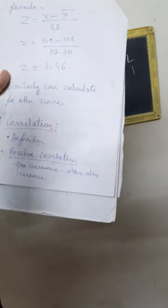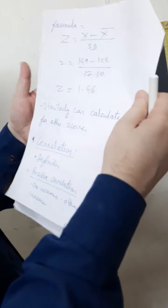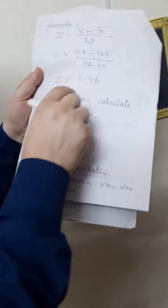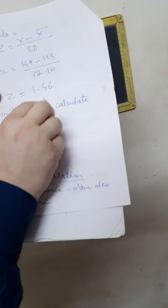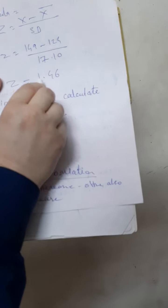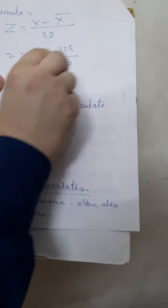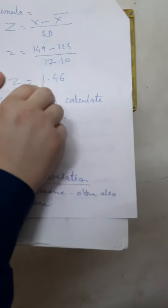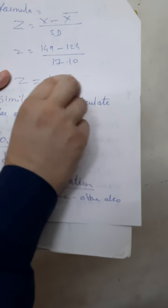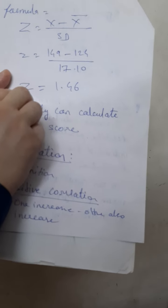It means 149 is away from the mean at a level of 1.46. So 149 is 1.46 units away from the mean. This is the value which the z-score gives — it tells us how far a score is from the mean.